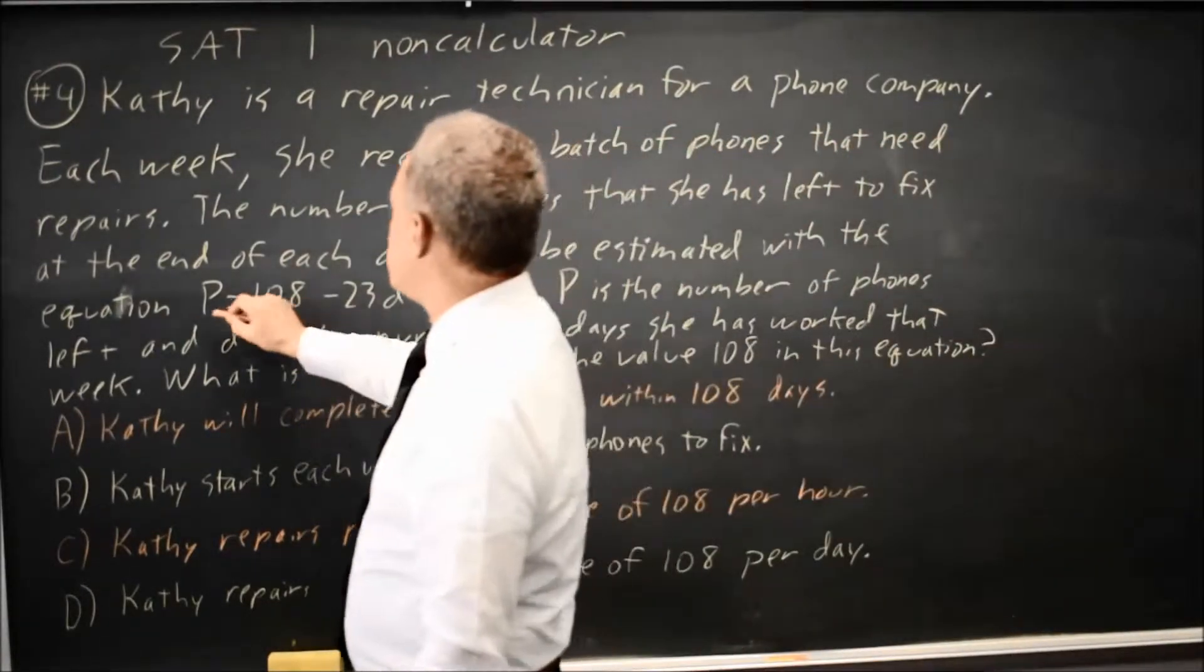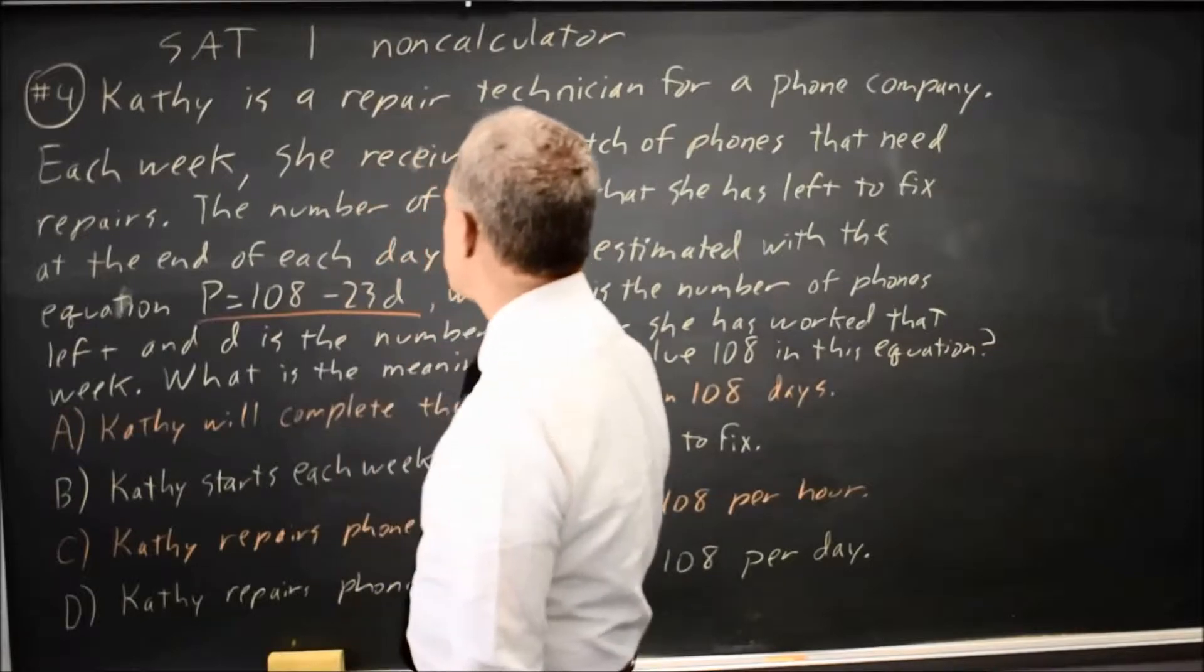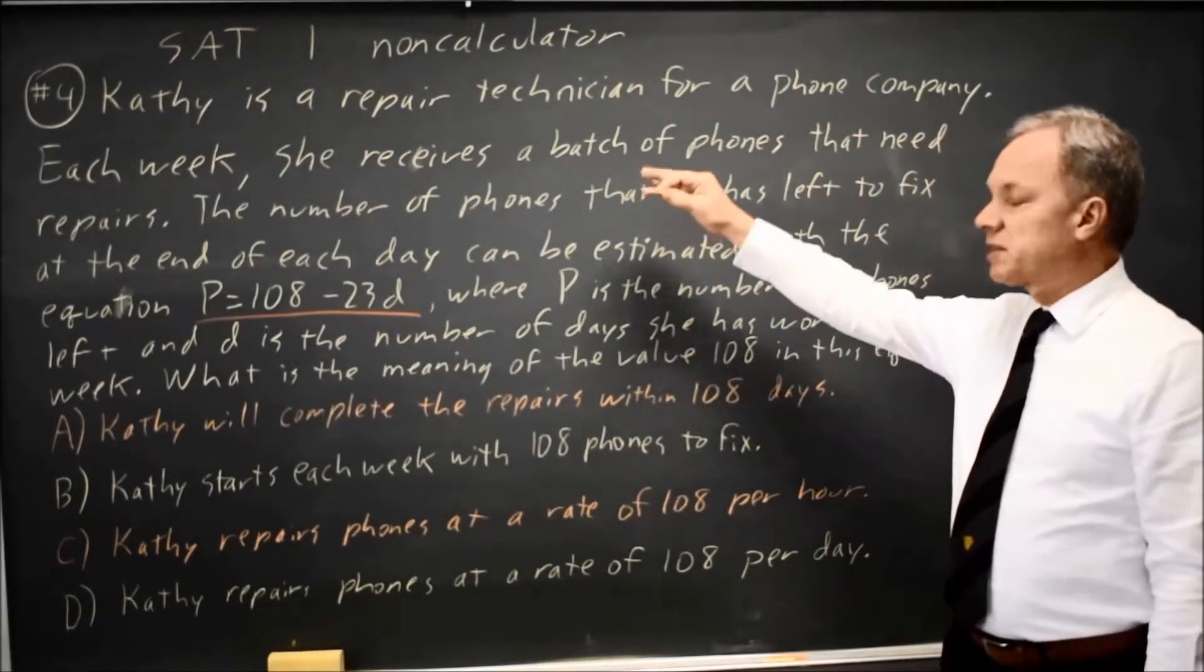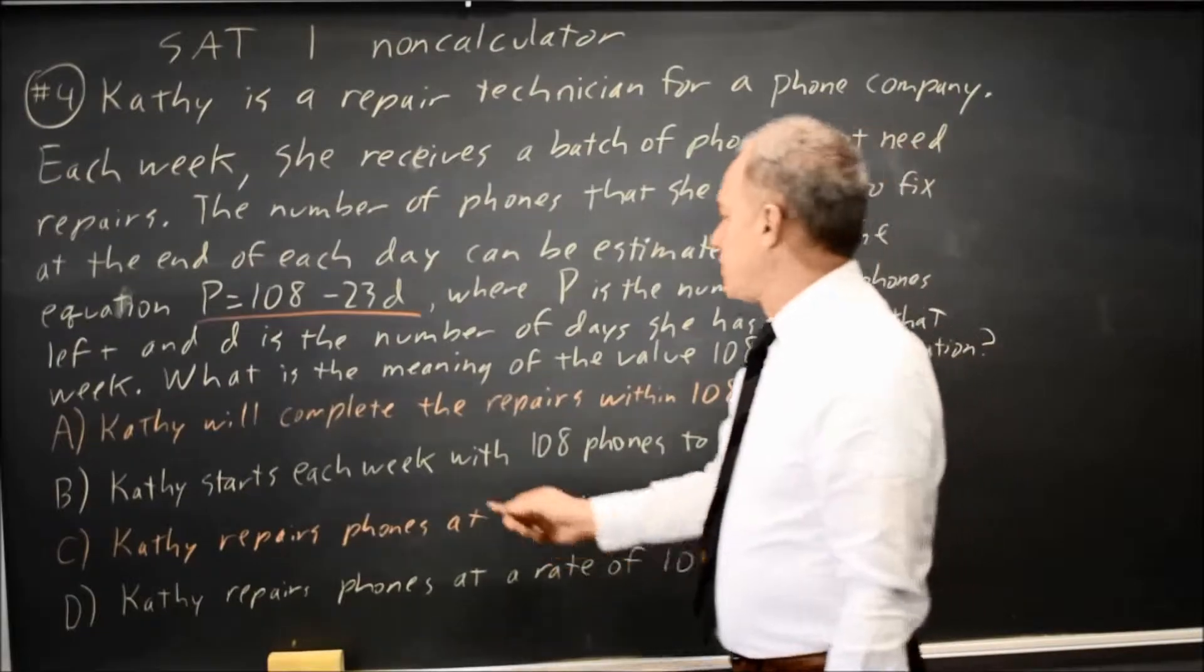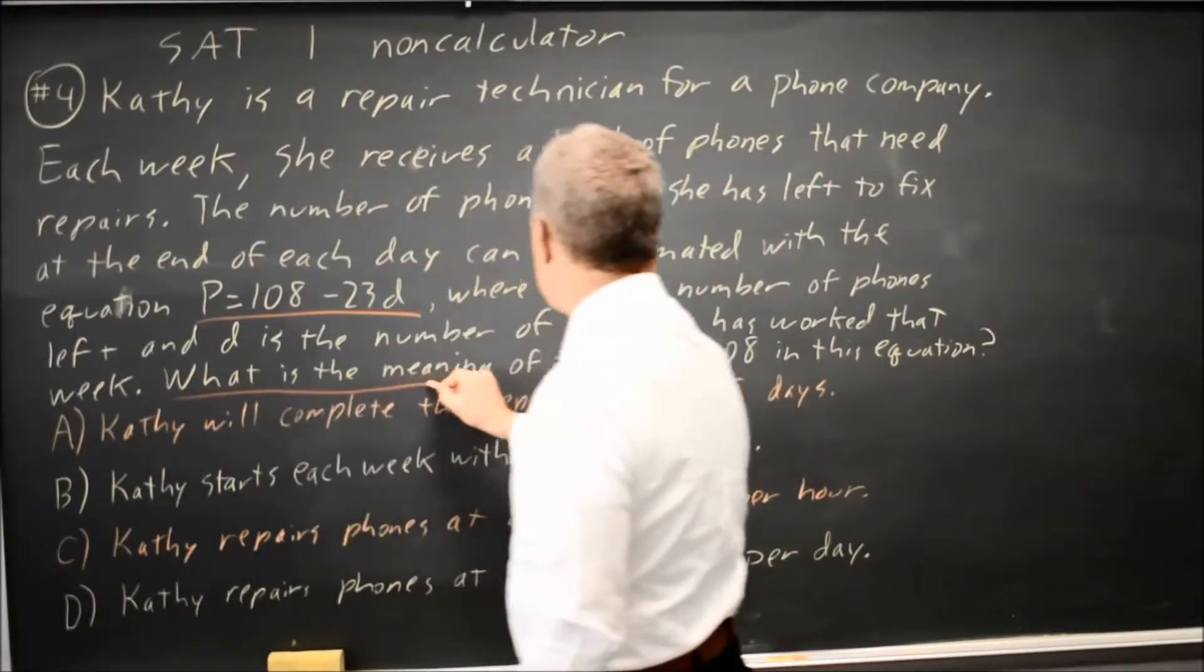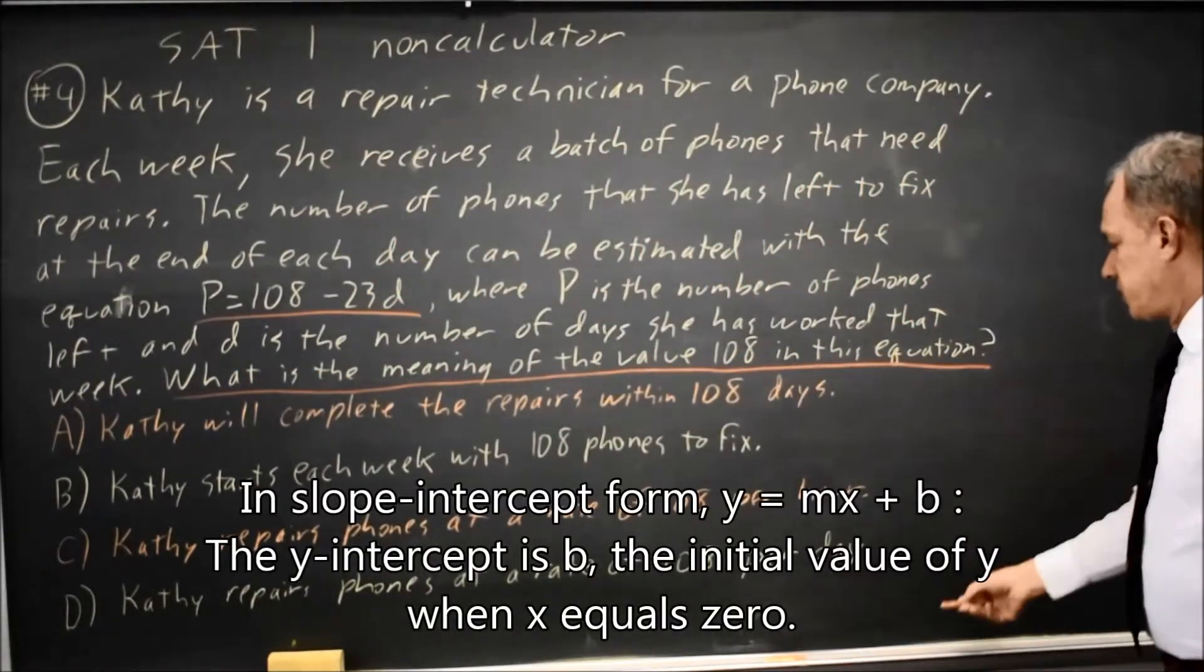They give you an equation, P equals 108 minus 23D, in the context of a paragraph, and at the end they ask, what is the meaning of the value 108 in this equation?